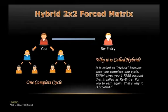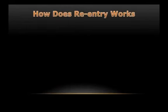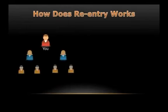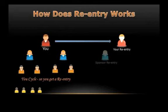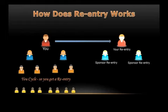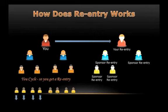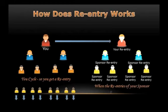How does re-entry work? That is you and your 6 downlines. When you cycle, you get a free re-entry. When your left cycles, her re-entry follows you in your new matrix. Same as when your right cycles — her re-entry still follows you. This continues to happen on your 4th, 5th, 6th, and 7th sponsor. As soon as they cycle, their re-entry follows you, making you cycle again without inviting a single person.